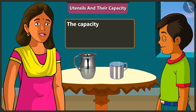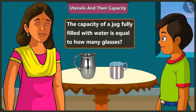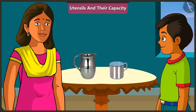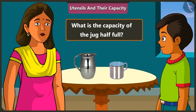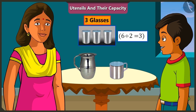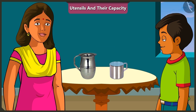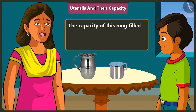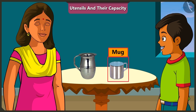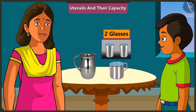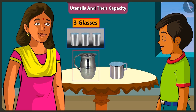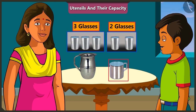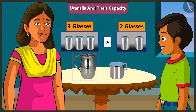How many glasses of water can fill this jug? The capacity of this jug is equal to six glasses. So, this jug half filled with water is equal to how many glasses of water? It is equal to three glasses. Now tell me, what is the capacity of this mug? The capacity of this mug is equal to two glasses. So, which has more water — a half filled jug or a mug which is fully filled? This half filled jug has three glasses of water, and the fully filled mug has two glasses. So, the jug has more water than the mug.